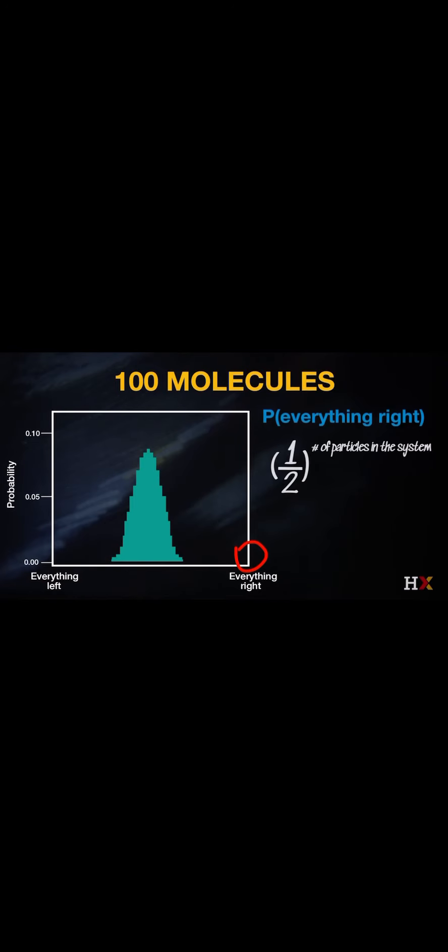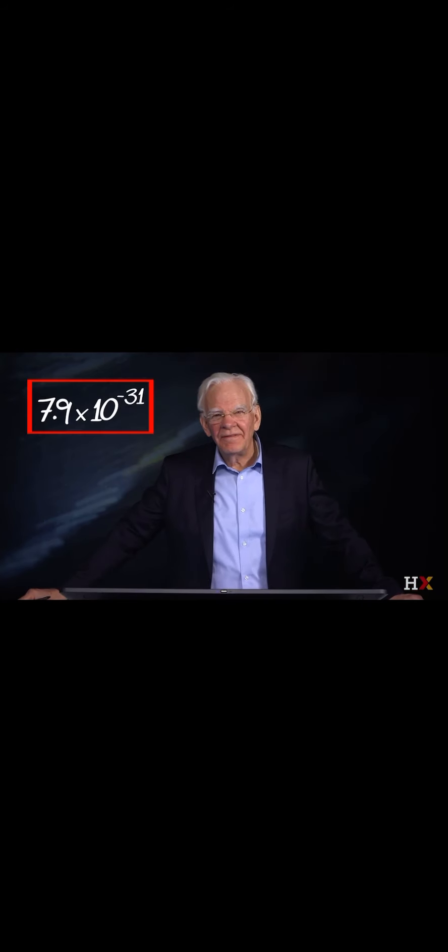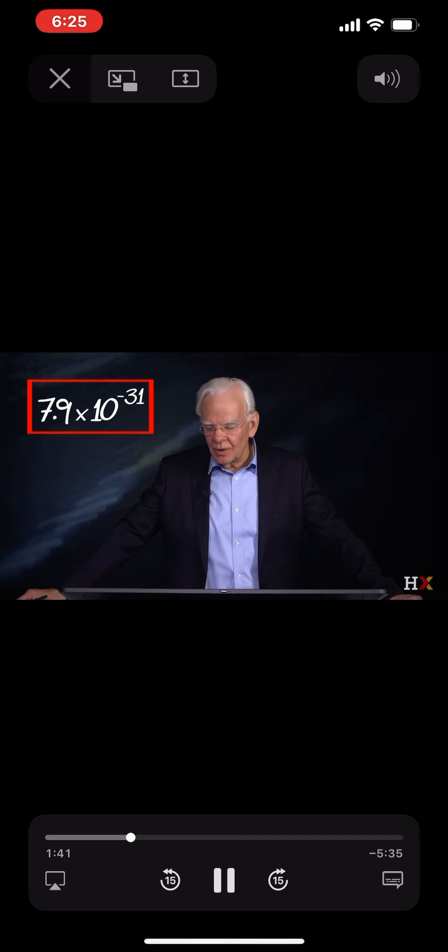I can calculate the probability for everything on the right with the same equation. That's one-half to the hundredth power, and that's equal to 7.9 times 10 to the minus 31. So, even with 100 molecules, the probability of finding 100 molecules all on one side is essentially zero.